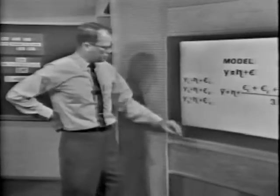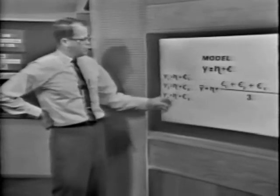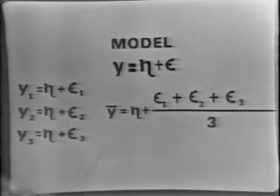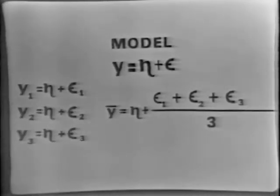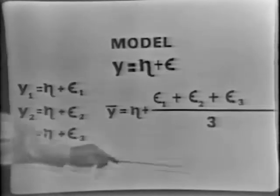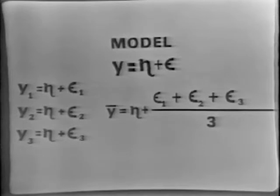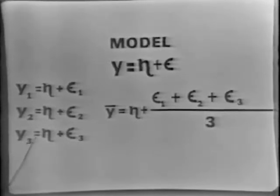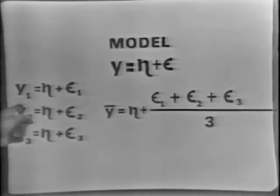Now I want to talk about another very important idea relative to averages. I'm going to describe a mathematical model. Y is equal to eta plus epsilon. Eta is a mean, a fixed quantity, a fixed number. And the epsilons are little disturbances that pop in and disturb eta so that we observe y. Y is what we observe. That mathematical model represents every observation I'll ever collect. If I collected three observations: y1 equals eta plus epsilon 1, and y3 equals eta plus its disturbance. The observations I get are characterized in terms of this mathematical model.